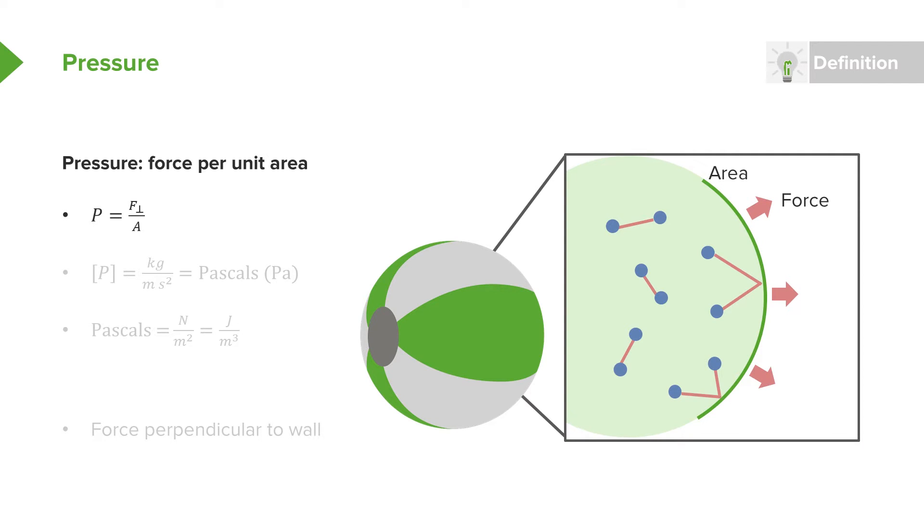The units of pressure, since pressure is defined as the force per unit area, will be the units of force divided by the units of area. Those units we call pascals. So this is kilograms over meters second squared. And so we have pascals as the units of pressure in our normal SI units that we've been using.